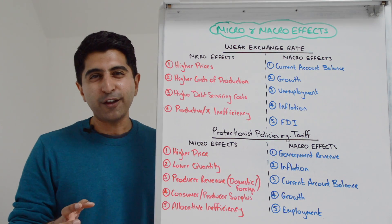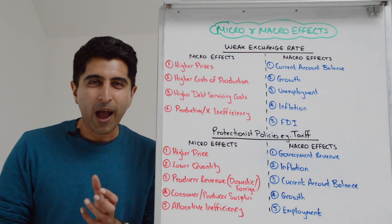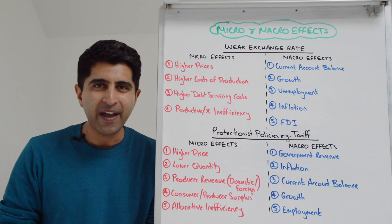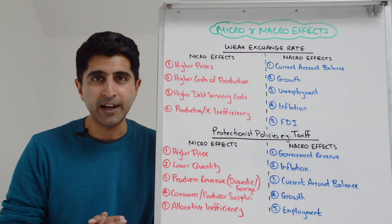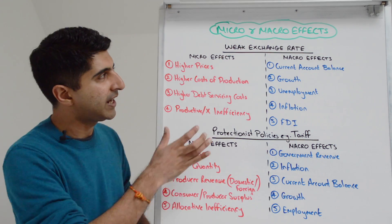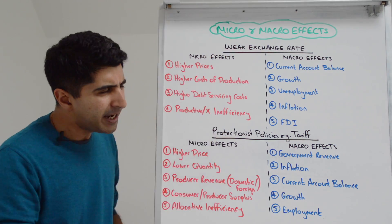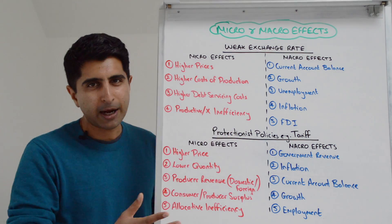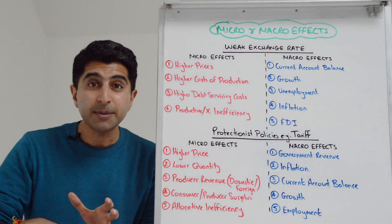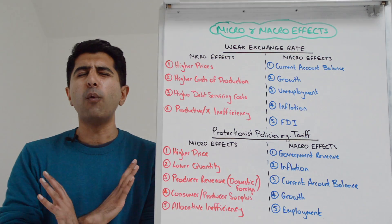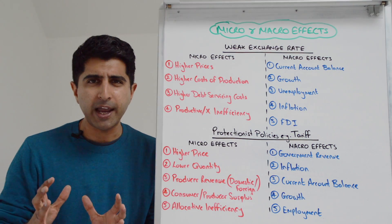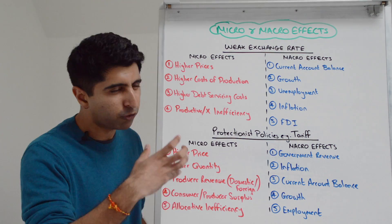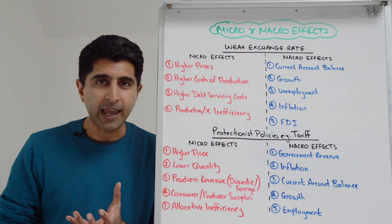Hello, AQA and Edexcel students. We know how in that 25 marker in Paper 3, micro and macro effects are very much expected within it. So this video is perfect as we take two major macro topic areas and dig down into the micro and macro effects of them. But you need to be doing the same exercise for a wide variety of topic areas that could easily feature in Paper 3.